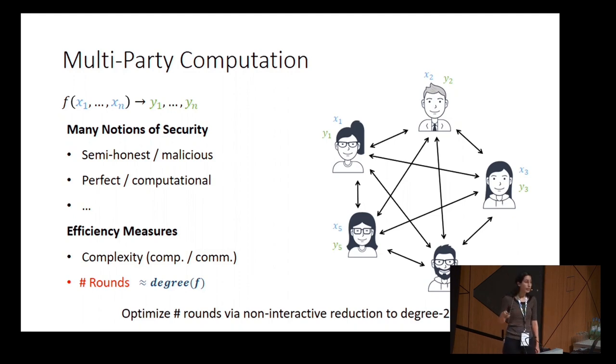The high-level idea is to show a non-interactive reduction from any function to a function of degree 2. In that way, once we have a protocol that computes this degree 2 function, we have a protocol that computes any function.